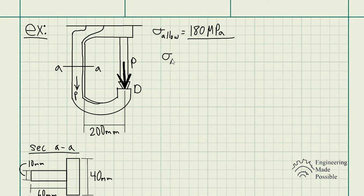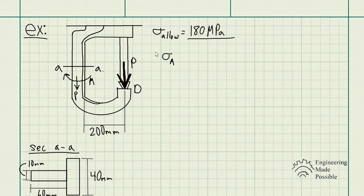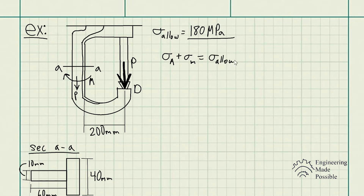We're going to have an axial stress being developed. But also, since we have P away from this cross-sectional area, that means we're going to have a moment at this section being produced due to that. So we also have bending stress to consider, to give us the actual total stress developed — in this case, the maximum allowable stress, which we have the given value for.